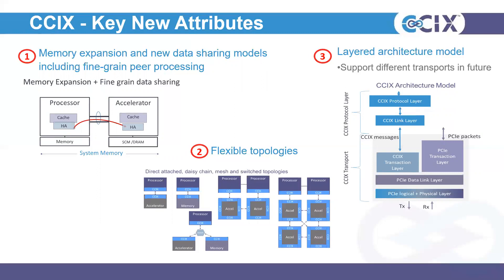The second key attribute is flexibility in topology — the ability to stitch processors, accelerators, and memory in unique ways. It could be a direct attach device, you could daisy chain, create a mesh of devices, or use a switch topology, enabling a lot of flexibility in system deployments. Last but not least, it's built on a layered architecture. It was always built from the protocol perspective with a focus on separating the protocol from the transport. Although we built it on top of PCIe originally, we wanted to make sure CXL was portable to take advantage of new transports coming on the market.